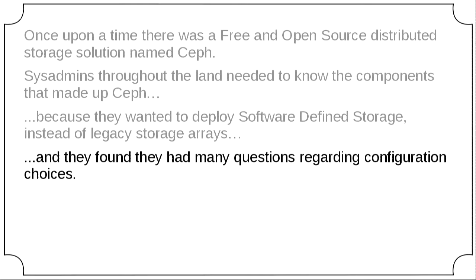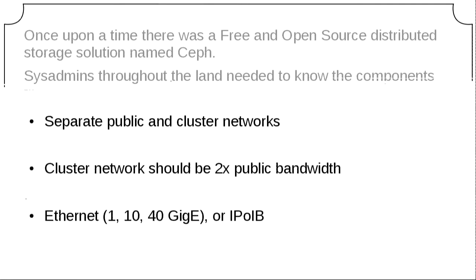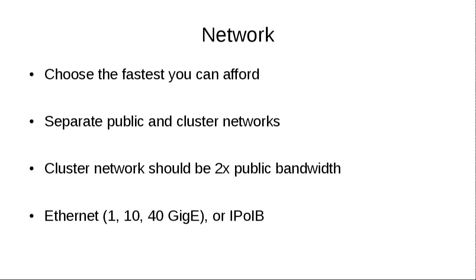They found they had many questions regarding configuration choices — for example, network. For Ceph, choose the fastest one you can afford with fully meshed backplanes and all that networking goodness. Separate public and cluster networks, and you want your cluster network to have twice the public bandwidth, because clients speak to the cluster on the public network while the cluster network is used for replication, background scrubs, peering, recovery, and so on. You can run this over anything that looks like IP: 1 GigE, 10 GigE, 40 GigE, four 10 GigEs bonded might be a good cost point. IP over IB as well — somebody's working on native RDMA support.